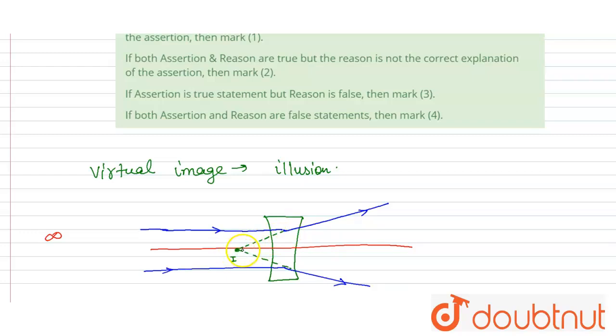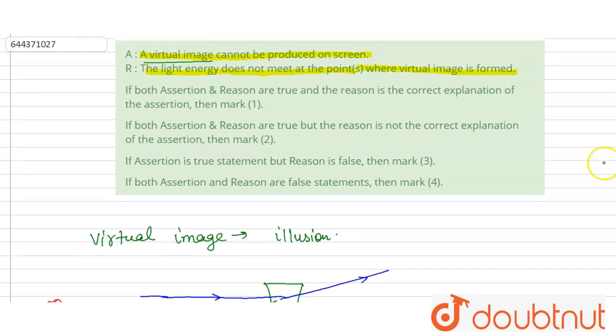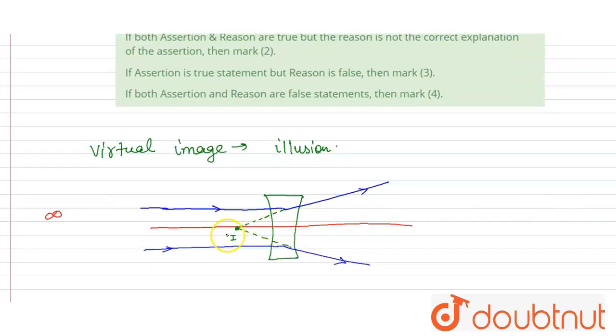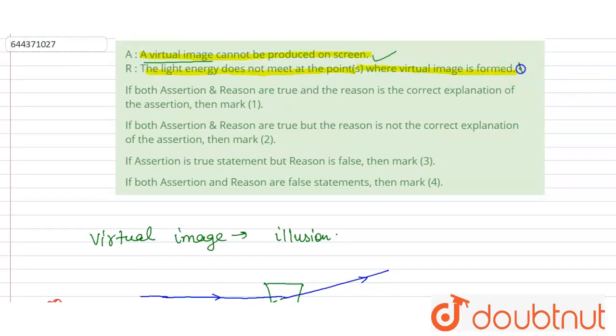So the assertion is true, and the light energy does not meet at the points where a virtual image is formed. So at the points where the virtual image is formed, the light rays seem like they are meeting. So the reason is also true and it is the correct explanation of the assertion. So the correct option will be the first one. Thank you.